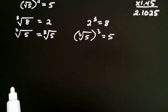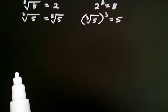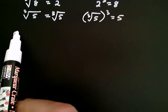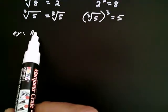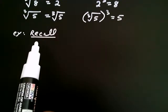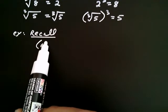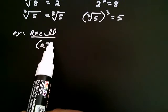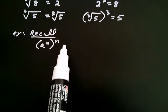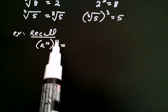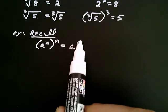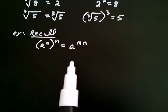So why am I bringing all that up now in the context of rational exponents? I'd like you to recall a property of exponents. Recall that if you take a to the m, and you raise that to the nth, what do you get? Well, you multiply the m and the n together to get a to the m times n.